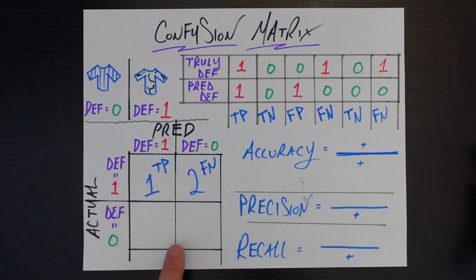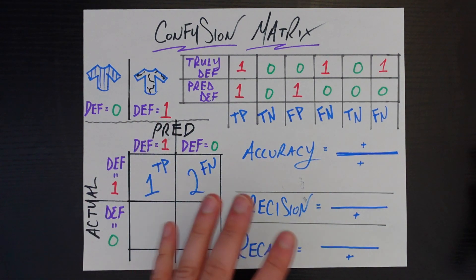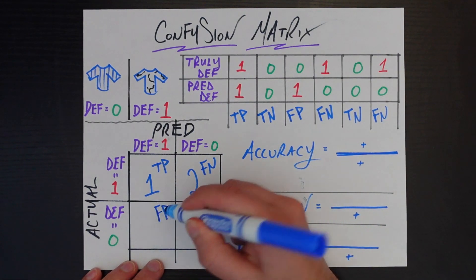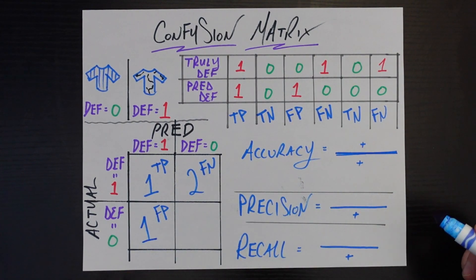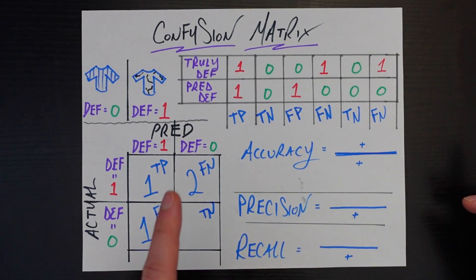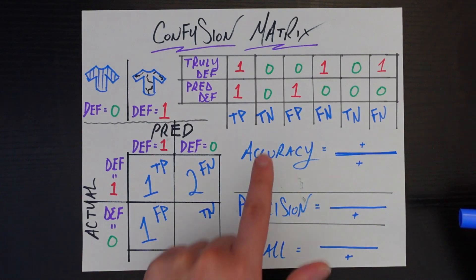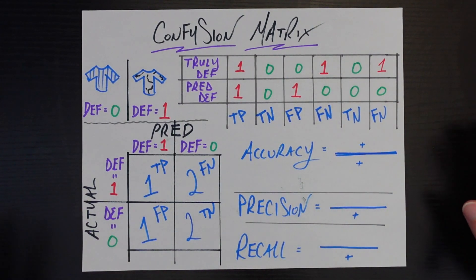So what's this bottom left box here? Here we're predicting things to be defective, so the second letter needs to be positive because we're predicting them in the positive class. But we're wrong about it because they're actually not defective. So these are false positives, and how many of those do we see? We just see one of those. And the last thing left is the true negatives, just for completeness — we're truly predicting this in the negative class, and it actually is in the negative class. How many true negatives do we have? We have two. Sanity check: one plus two plus one plus two adds up to six. There's six examples here — everything's good to go.